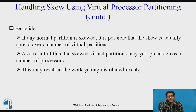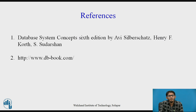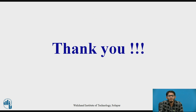The basic idea is that if any normal partition is skewed, the skew can be spread over a number of virtual partitions. As a result, the skewed virtual partitions may get spread across a number of processors, causing the work to be distributed evenly and solving the problem of skew. The references for this lecture are: Database System Concepts, sixth edition, by Sudarshan, and the website www.db-book.com. Thank you.